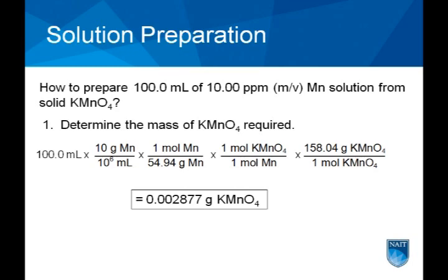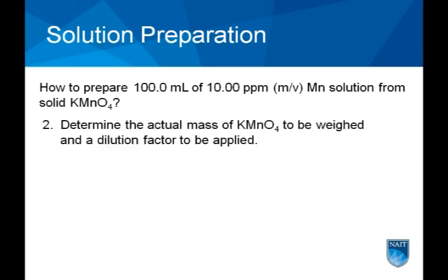A mass of 2.877 milligrams is too small to be weighed accurately on an analytical balance. It is more accurate to weigh a mass greater than 0.2 grams and use a series of volumetric dilutions to transfer small mass.